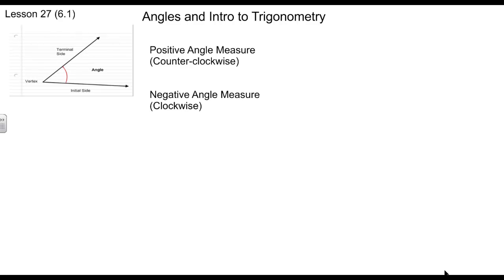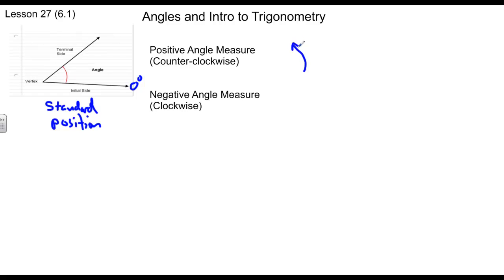Let's first talk about an angle. Within an angle, we've got some specific parts. You've got your vertex with an initial side and a terminal side. If this initial side is at zero degrees, we say that's in standard position. The angle rotates and finishes at another ray called the terminal side. If we measure in a counterclockwise direction, that's a positive angle measure. If we measure from standard position in a clockwise fashion, that's a negative angle measure.